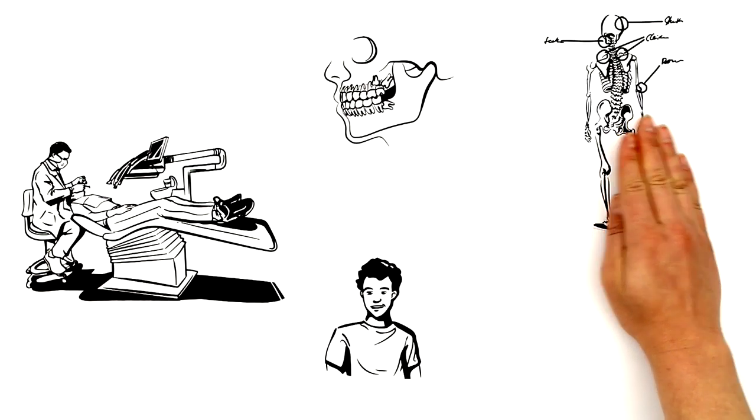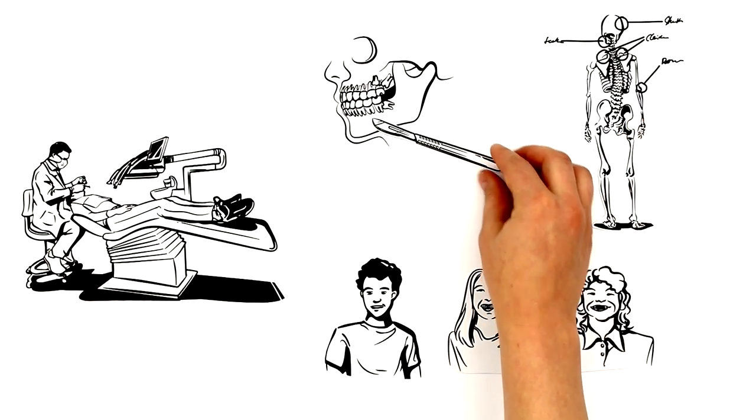The most common form of treatment for kids with cleidocranial dysplasia is surgery on the jaw.